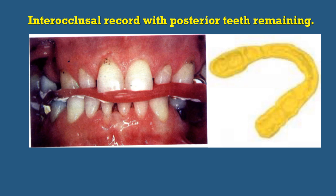The second method is the inter-occlusal record with posterior teeth remaining. This is a modification of the first method, used when sufficient natural teeth remain to support the RPD — such as in Class III or Class IV — but the relationship of the opposing natural teeth does not permit occluding the casts by hand. In this case you take the inter-occlusal record using some inter-occlusal medium, just as in fixed prosthesis.